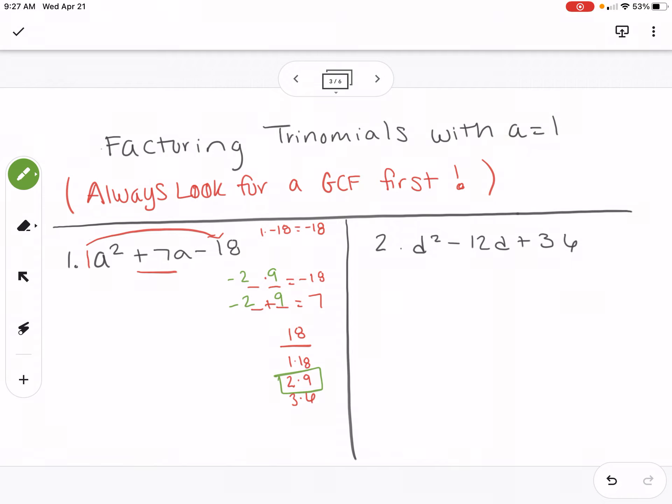So I'm ready to write down my factors. Since this started with 1a squared, my factors are both going to start with a. And then I'll put the negative two and the positive nine. And those are factors for this problem.